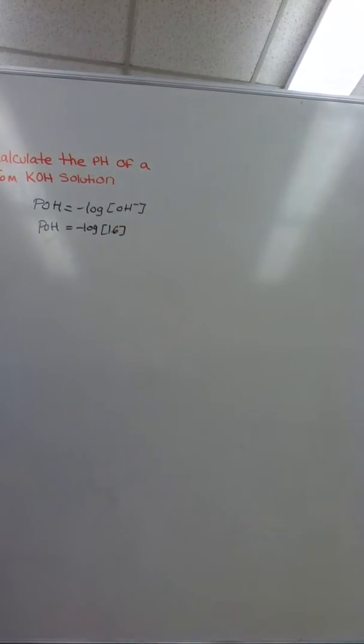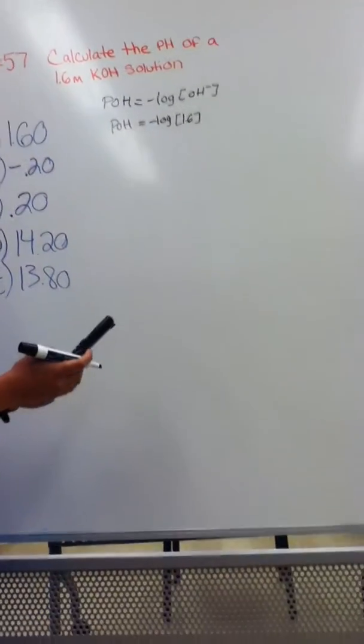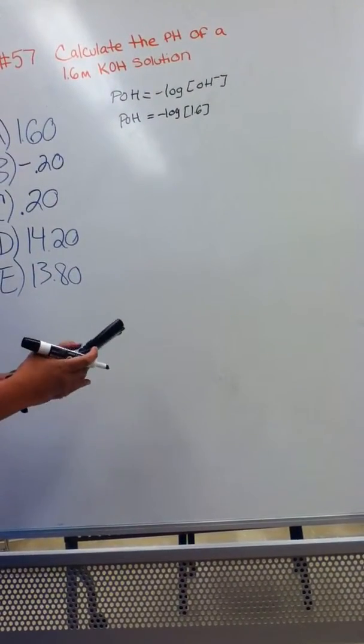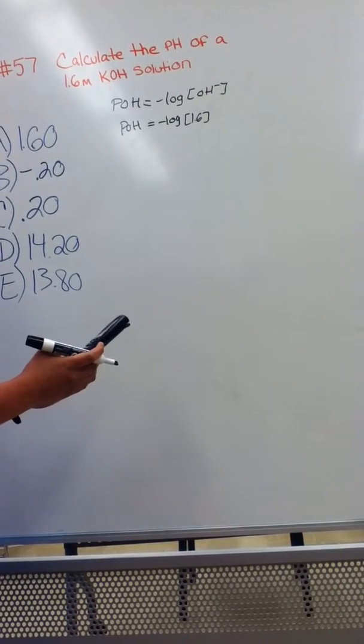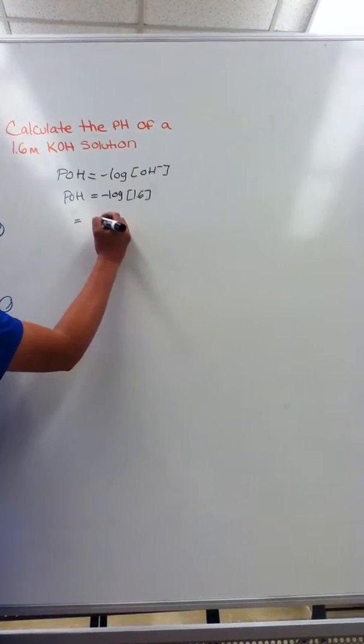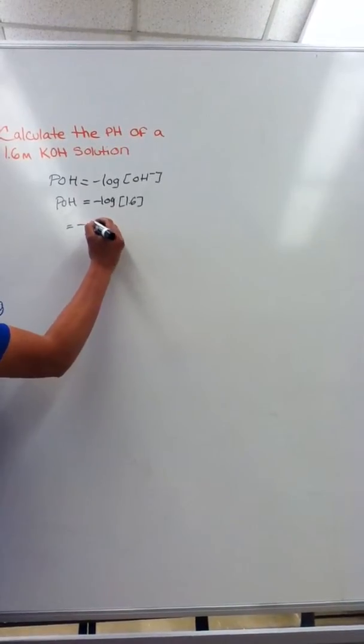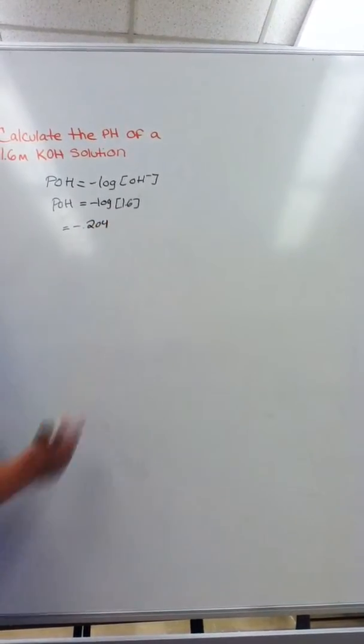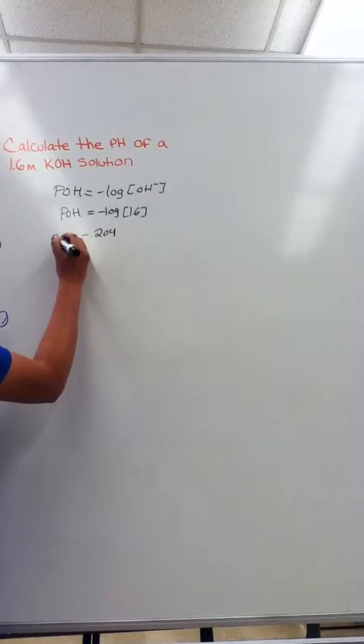If you plug that into your calculator, you're going to get negative log of 1.6 is equal to negative 0.204. So this would be your POH.